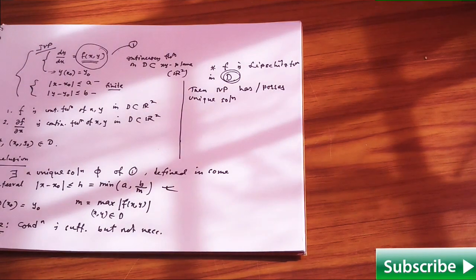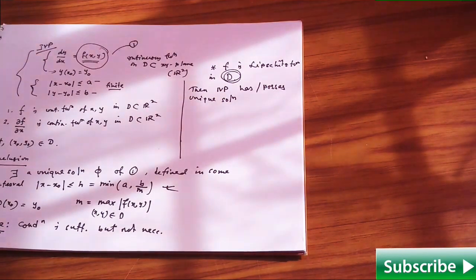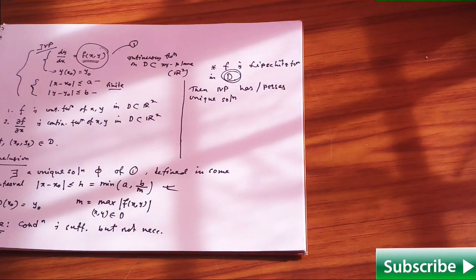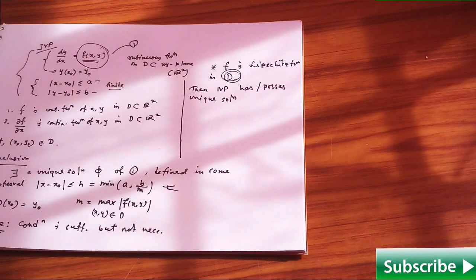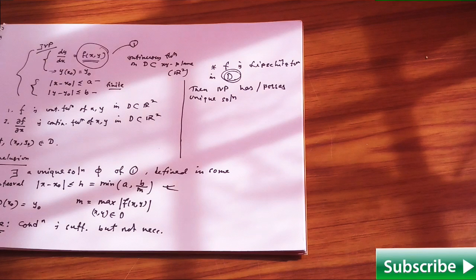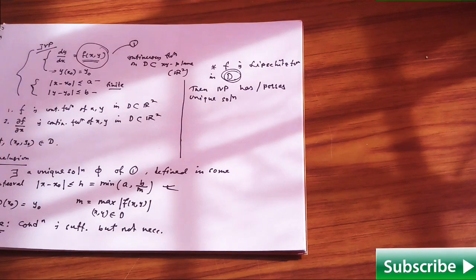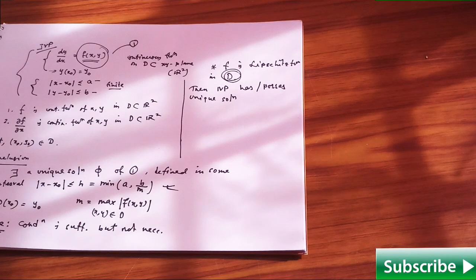Whenever f is a Lipschitz function, then the initial value problem possesses a unique solution. That does not mean that if the initial value problem possesses a unique solution, then f must always be a Lipschitz function. That means the converse of that statement or result is not true. You have to keep that in your mind.